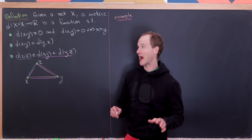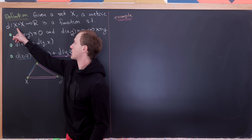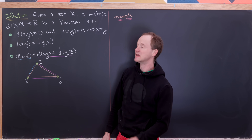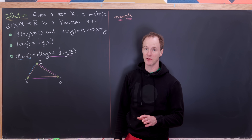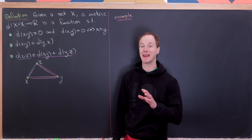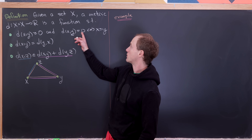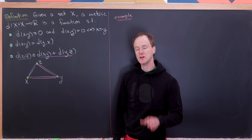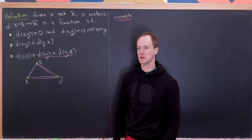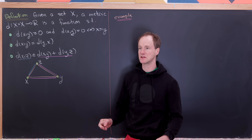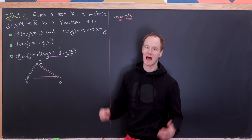Before we do any of that we need to recall the definition of a metric and thus a metric space. So let's say we've got any set X, and we'll define a metric as a function from X cross X to R satisfying three conditions. The first is that d(x,y) is bigger than or equal to zero — the distance between any two points cannot be negative. Furthermore, the distance equals zero if and only if you're at the same point, so two unequal points must have a positive distance between them.